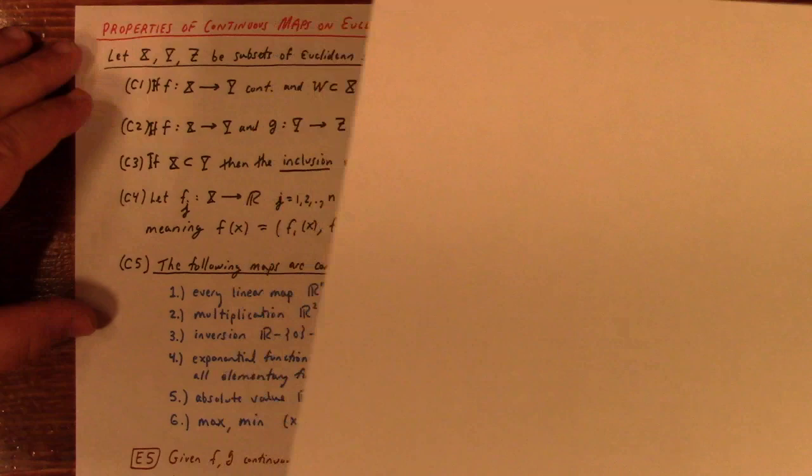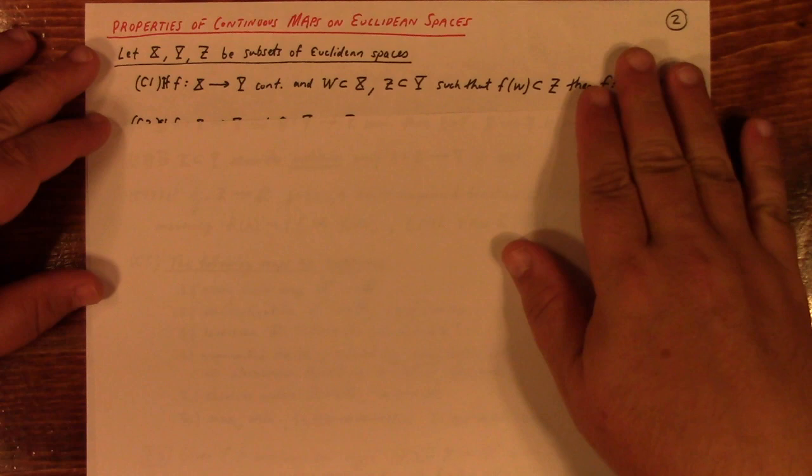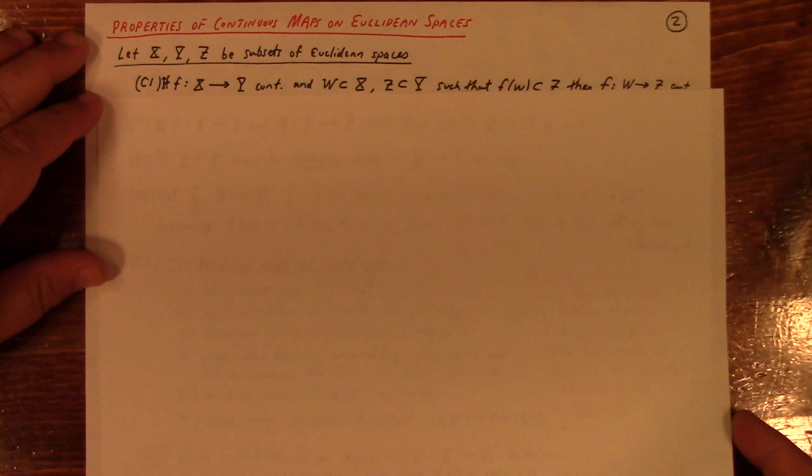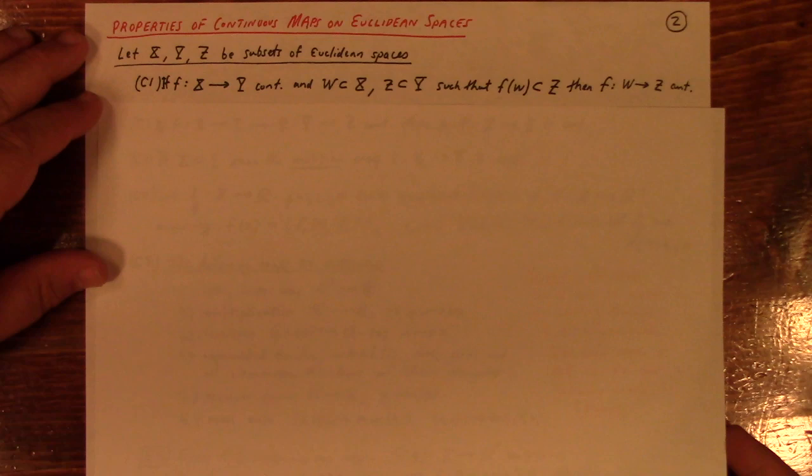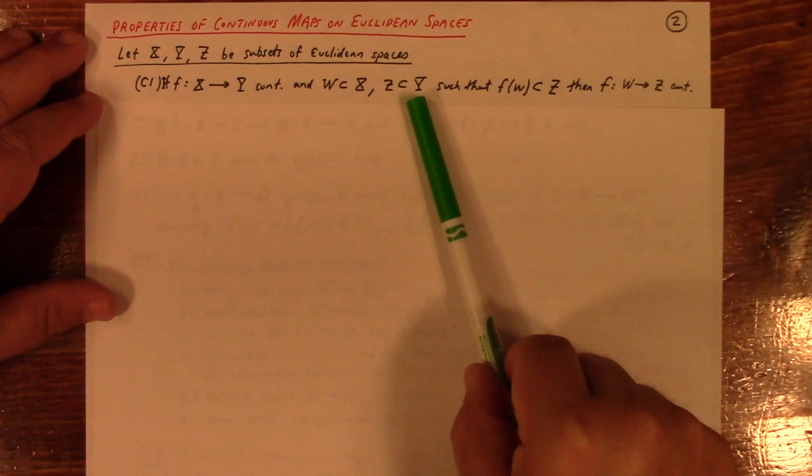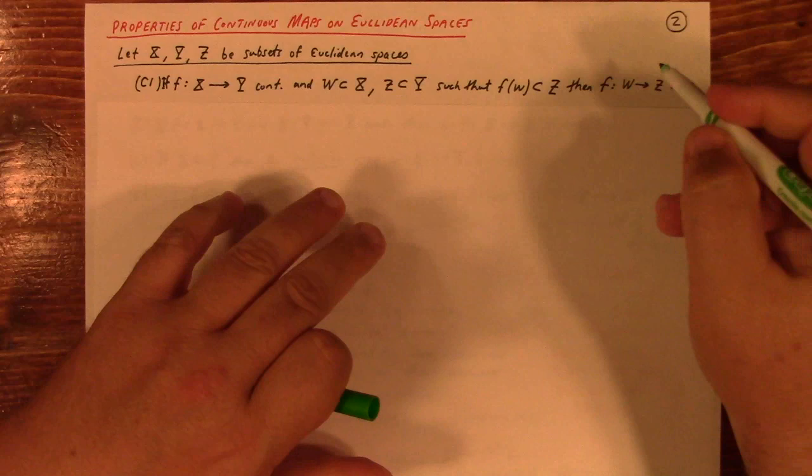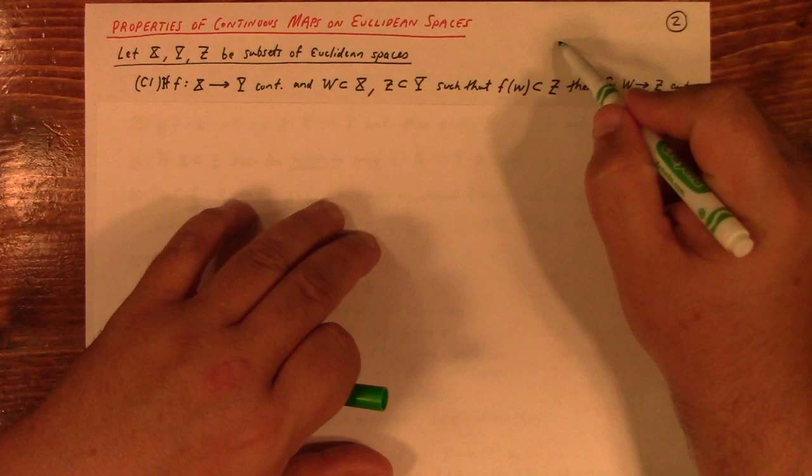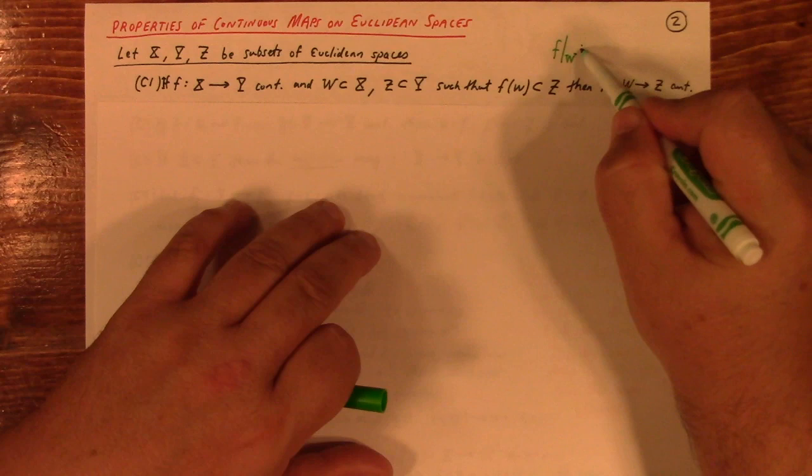So then we go on to just down memory lane to reiterate a list of things we know about continuous maps on Euclidean spaces. I'll be brief here. X, Y, Z subsets of Euclidean space. You've got a continuous function. Then if W is a subset of X and Z is a subset of Y, then F from W to Z is continuous.